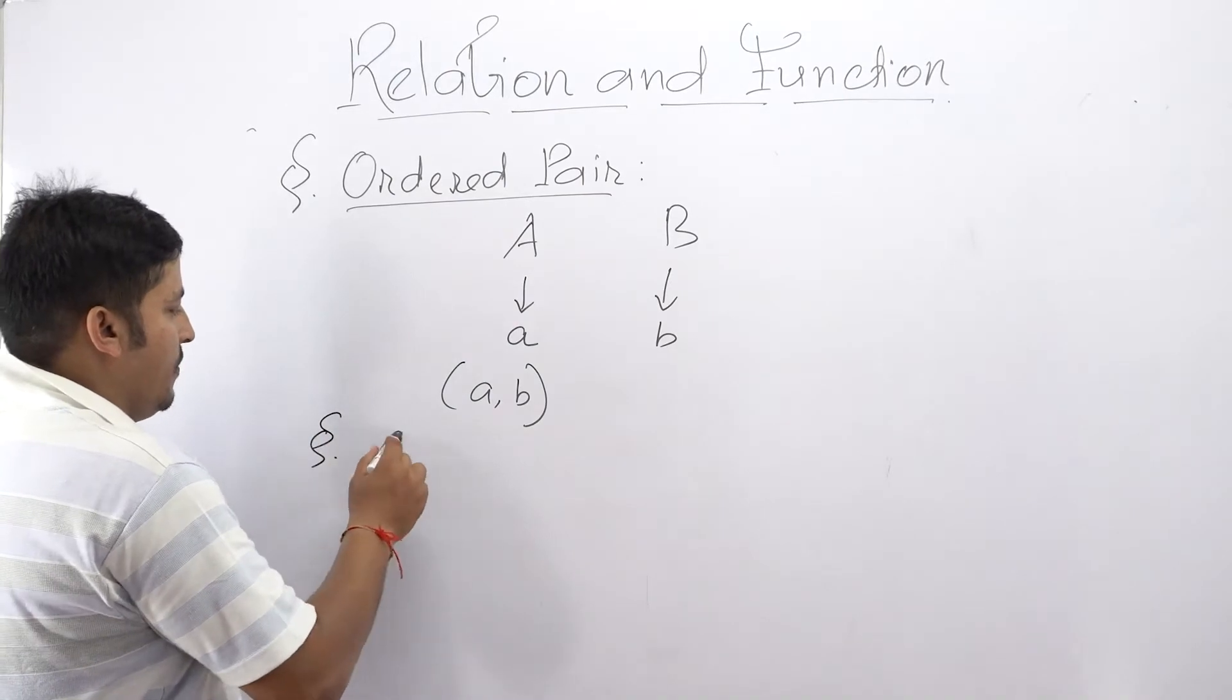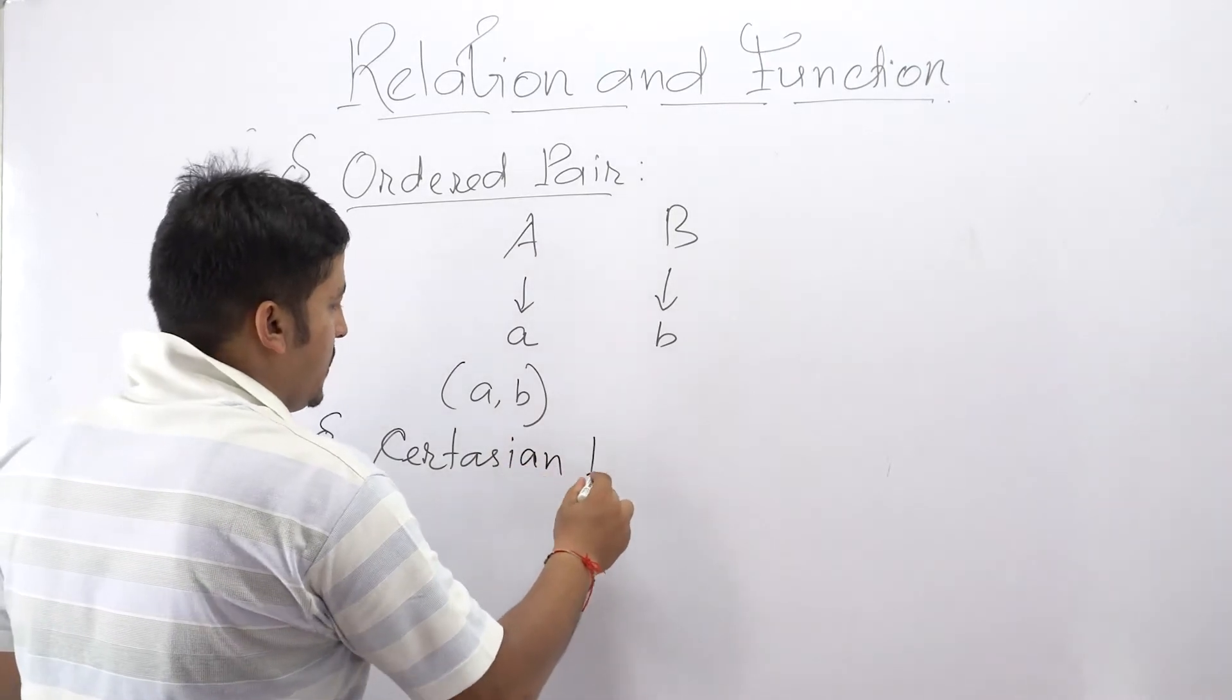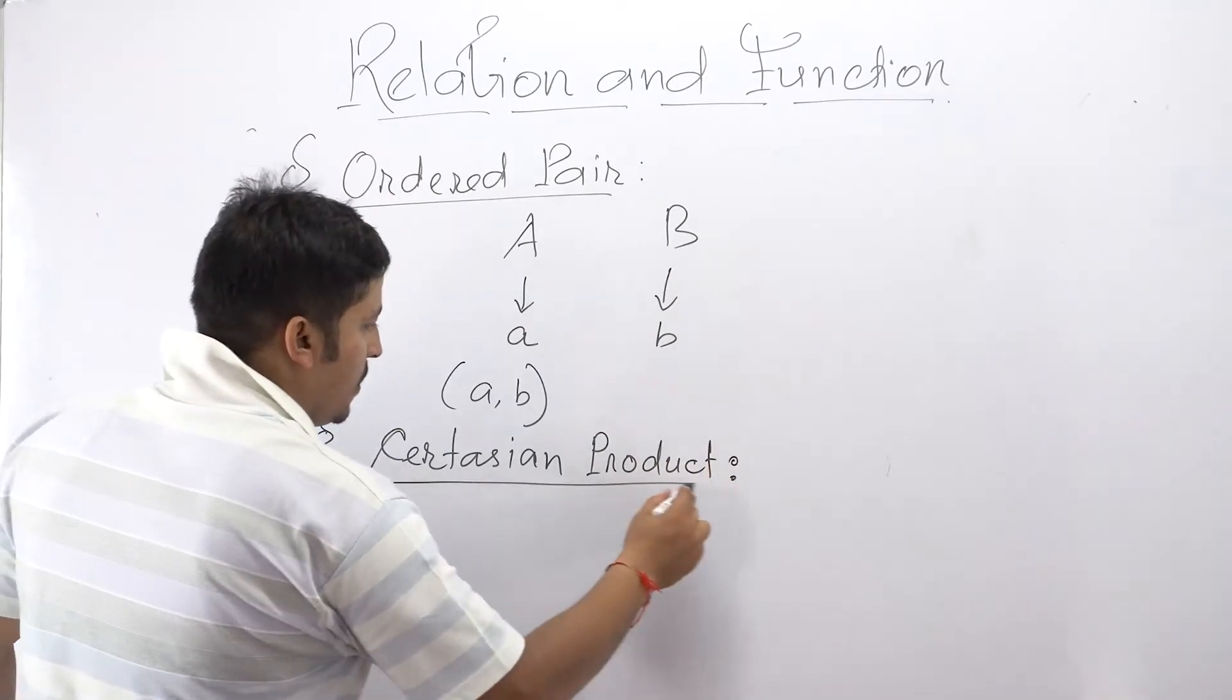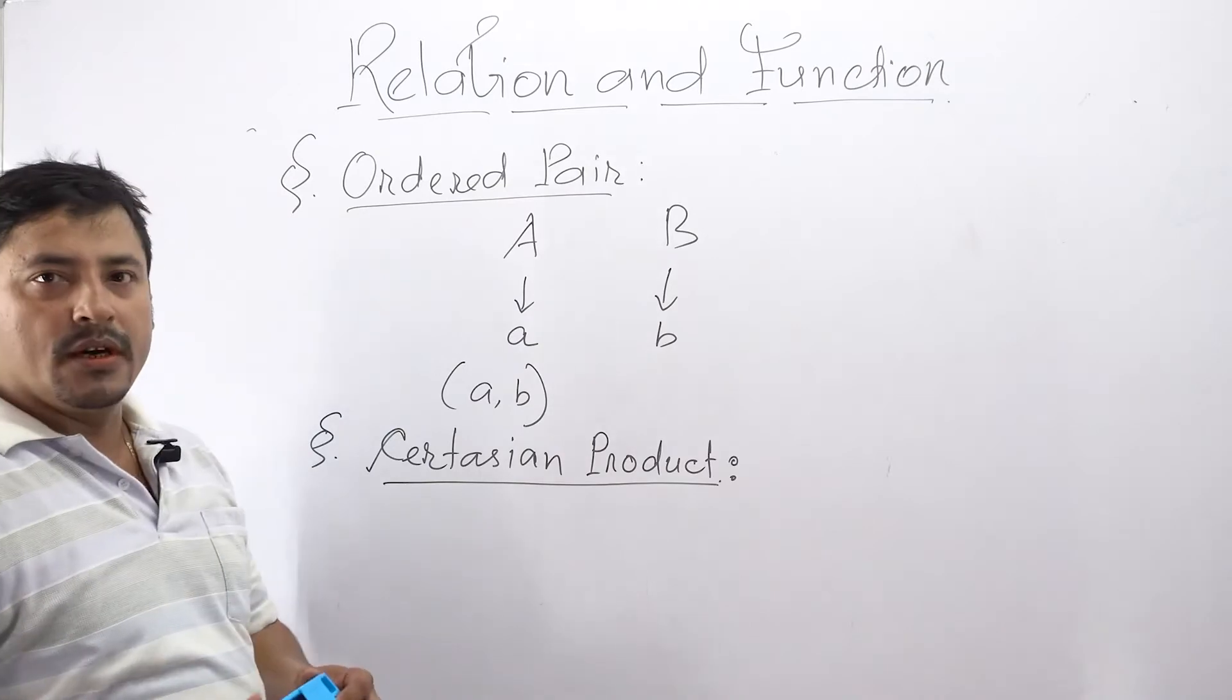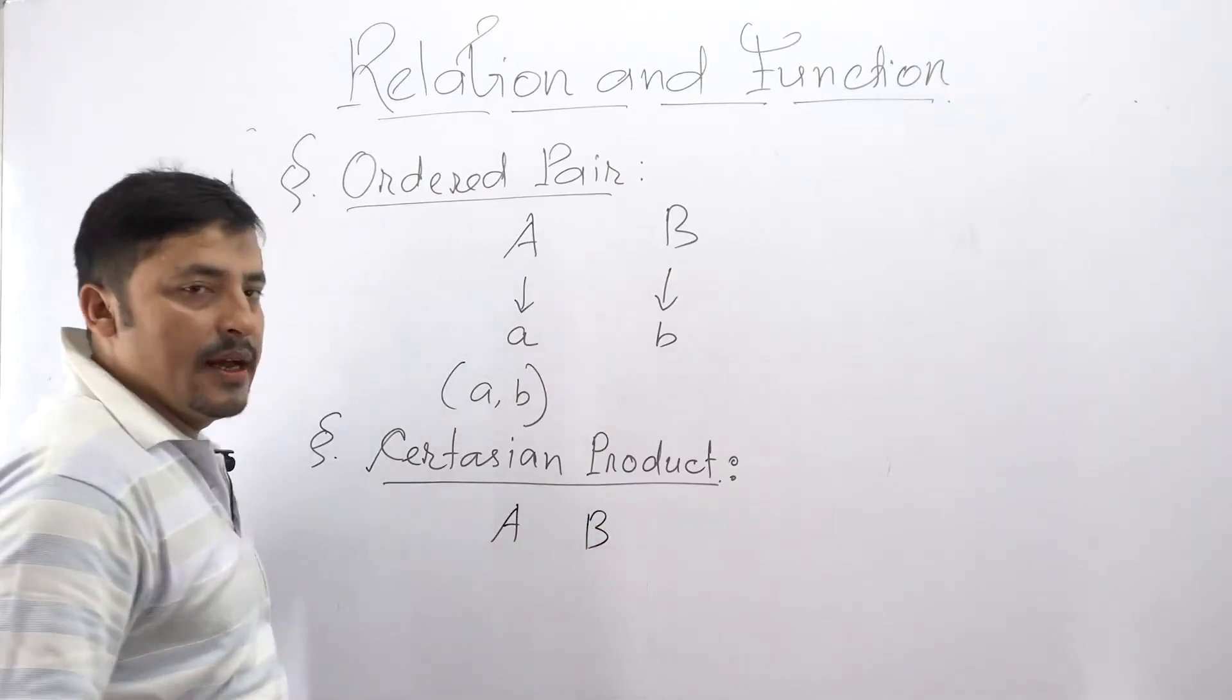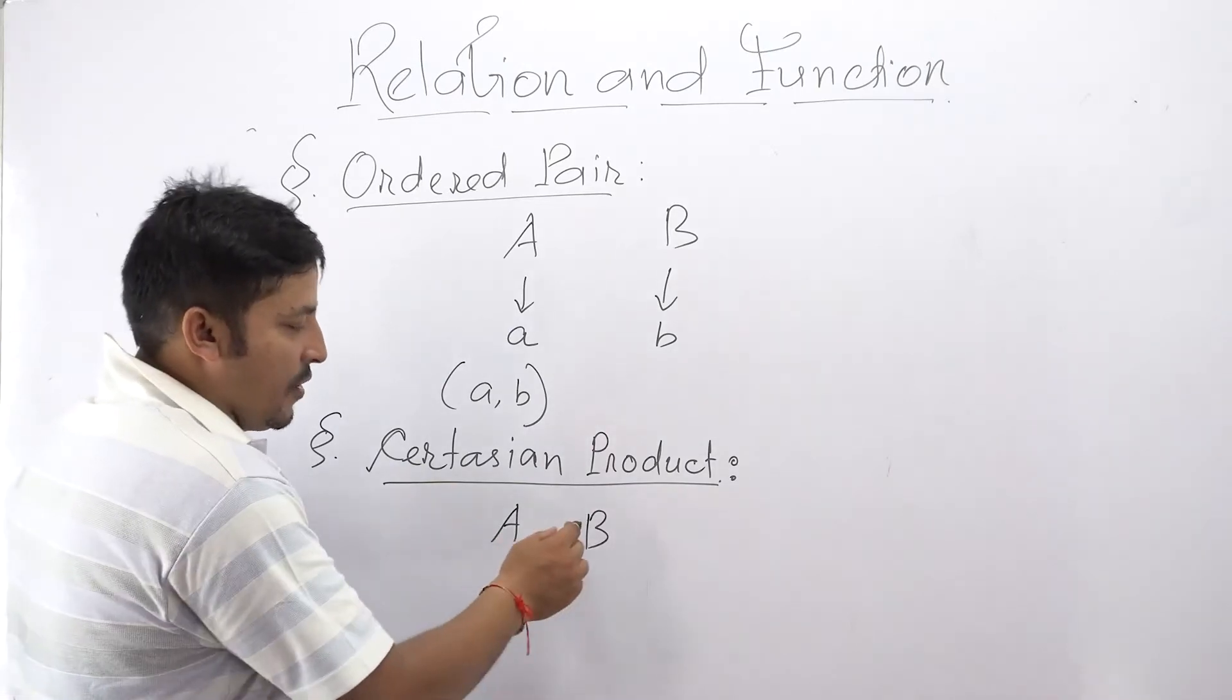After ordered pair we will have another important topic that is nothing but Cartesian product. Now in Cartesian product what we have to do? Again in this case also let us consider two non-empty sets capital A and capital B, then since A and B are two non-empty sets.